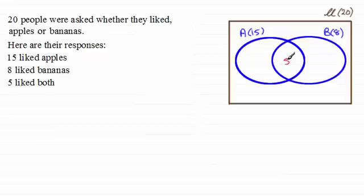So we'll put 5 there. And so that leaves me with 15 take away 5, 10 people liking just apples or apples only. And for this region here, it'll be 8 take away 5. So that's going to leave me with 3 people that liked just bananas. So now I've accounted for a total of 10 plus 5 plus 3 people. In other words, 18 people. So that leaves me with 2 from the 20 here that do not like apples or bananas. And we can put them anywhere on the outside here. So let's just put them in that space there.